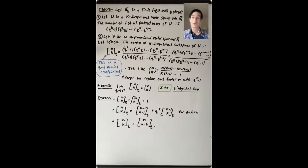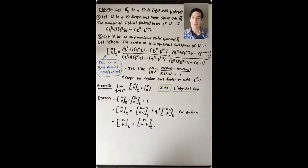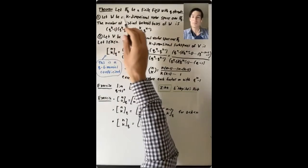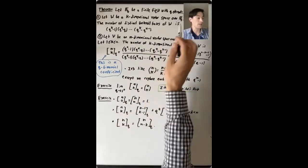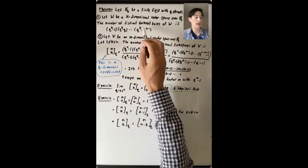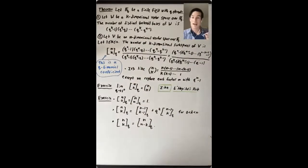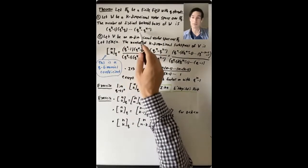We'll begin this lecture by proving some results about vector spaces over finite fields. Let Fq be a finite field with q elements. First, let W be a k-dimensional vector space over Fq. The number of distinct bases of W is the product q^k minus 1, times q^k minus q, times ... times q^k minus q^(k-1). By distinct bases, we mean distinct ordered bases — if two bases consist of the same vectors in a different order, we count those as distinct.